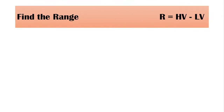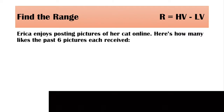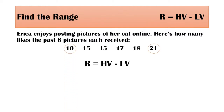Let's take this example in finding the range. Erica enjoys posting pictures of her cats online. Here's how many likes the past six pictures each received. Find the range. The formula in finding the range is highest value minus the lowest value. In the given data, the highest value is 21 and the lowest value is 10. Let us plug in the values in the formula: 21 minus 10. Therefore, the range is 11.